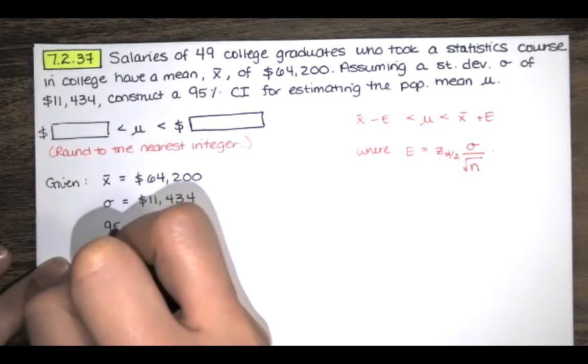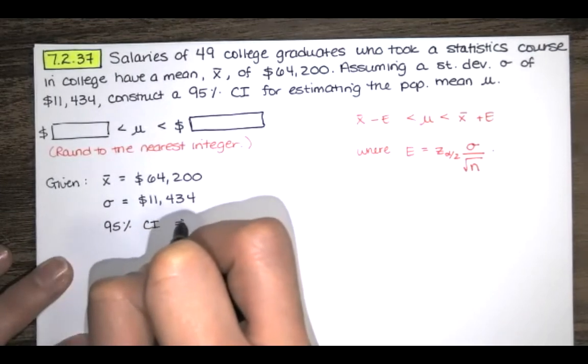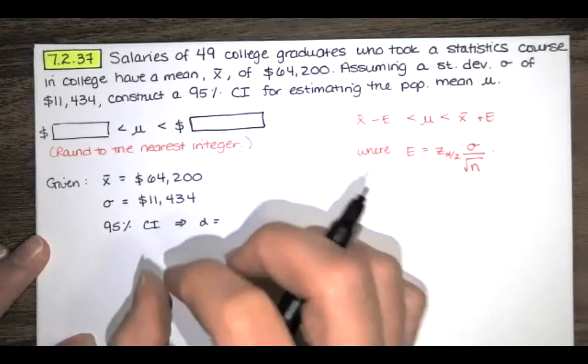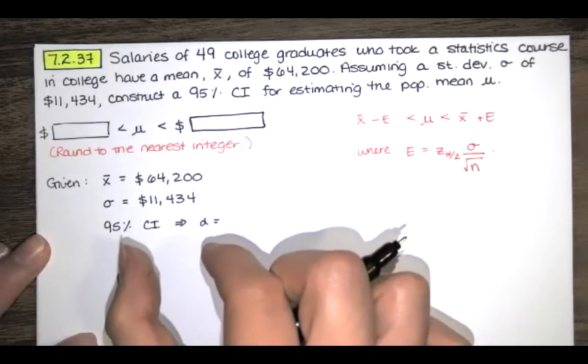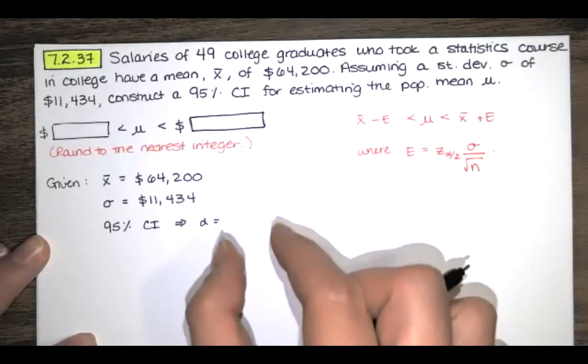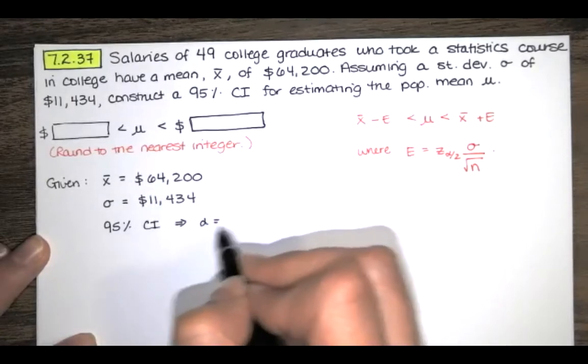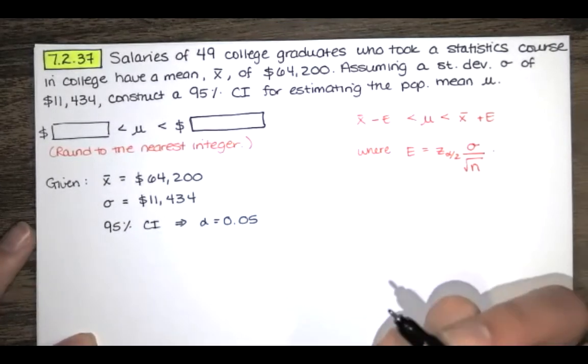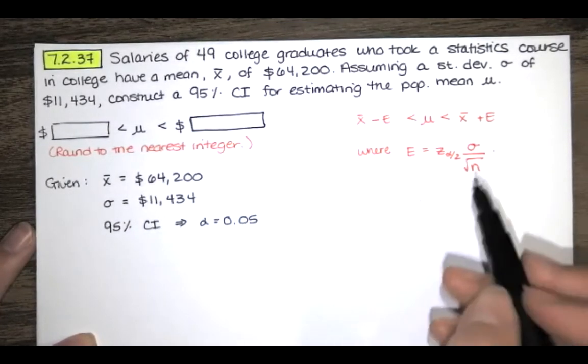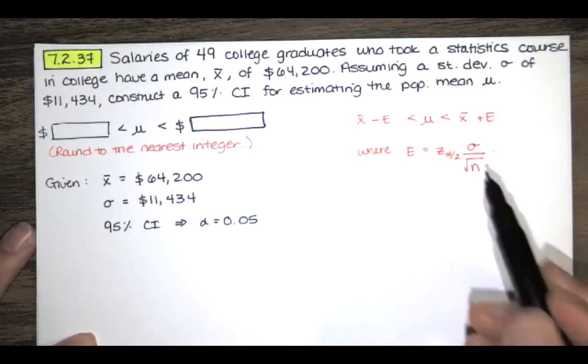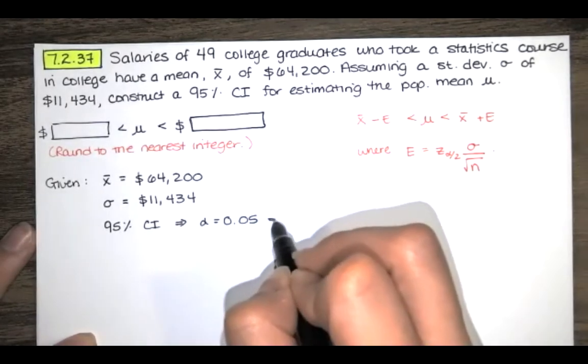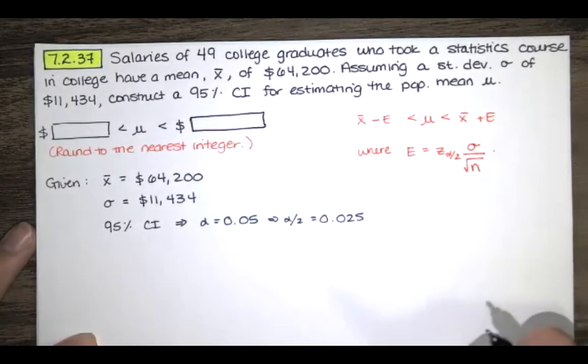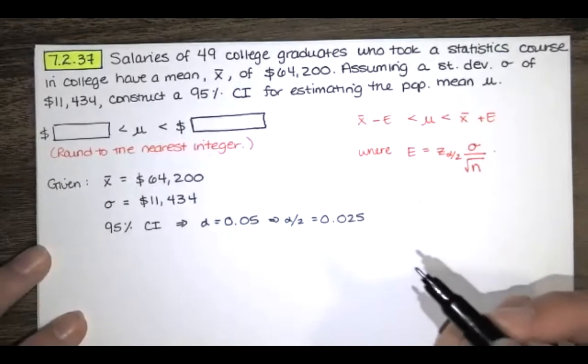We're asked to construct a 95% confidence interval, and that means that alpha is the complement of that. So if the confidence interval is 95%, alpha is the complement, which would be 5%, but we want to write that in decimal form, that's 0.05. And then to get the critical value here, we actually need alpha over 2. So we're going to take half of that. Half of 5% is 2.5%, which can be written in decimal form as 0.025.